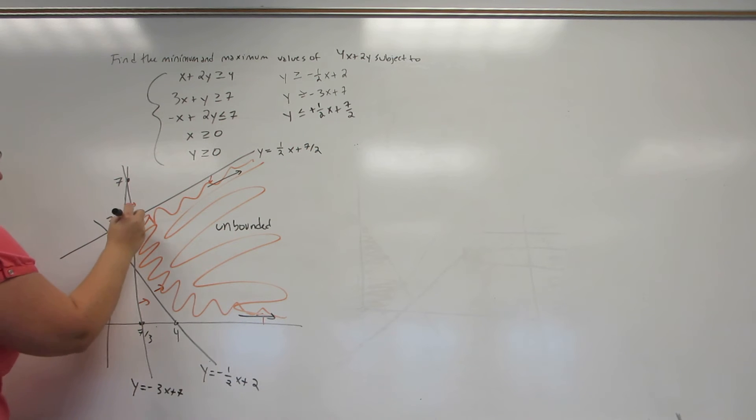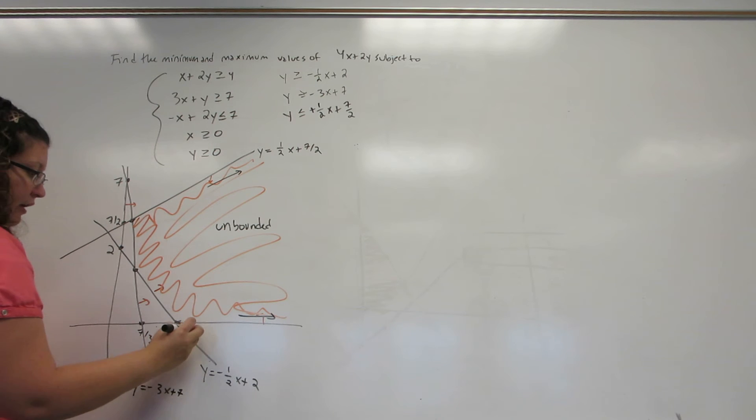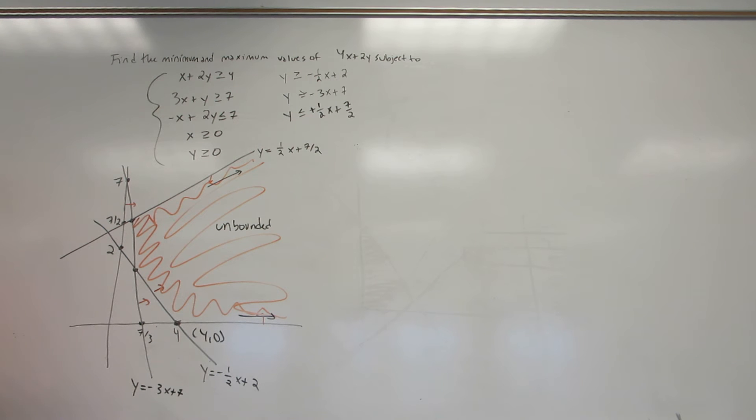But first, I see three corner points that I need to find the coordinates of. This one down here I already know because it was an X-intercept. It has coordinates 4 comma 0.